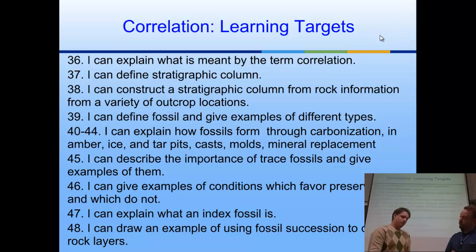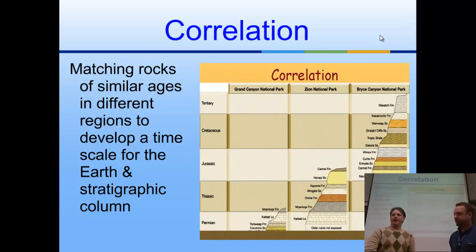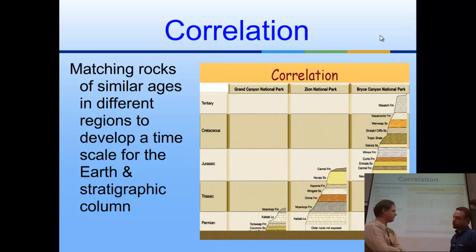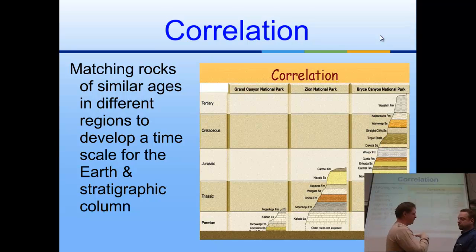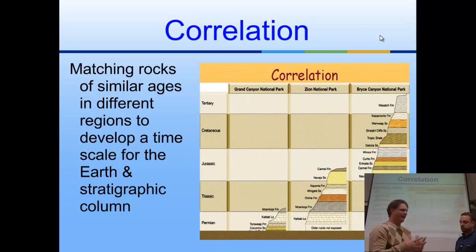They can flip back to the previous video for some clues to help them with correlation and other things. So let's talk about correlation — the matching of rocks of similar ages. If we take a look at this diagram right here, it looks like we've got a geologic time scale that we're going to talk about later in a different video. We have all these different layers of rocks, and they all seem to be horizontal — that's the law of original horizontality we talked about last video. And they all have these different names, which is commonplace when identifying different rock layers.